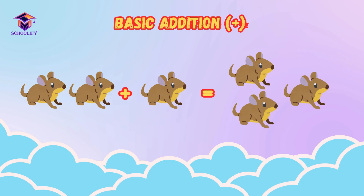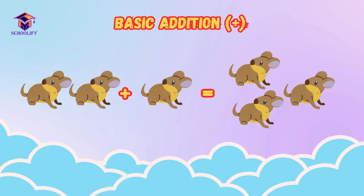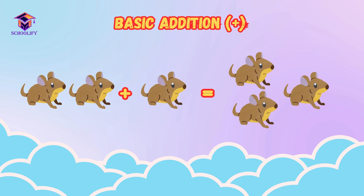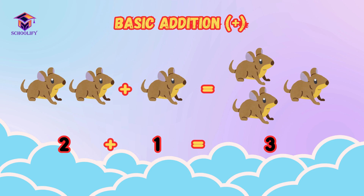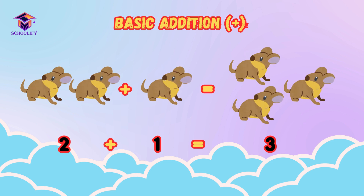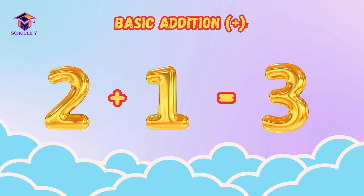Two rats plus one rat is equal to three rats. It means two plus one is equal to three.